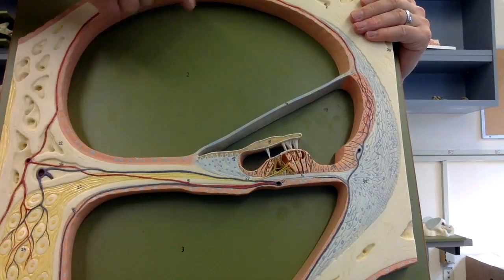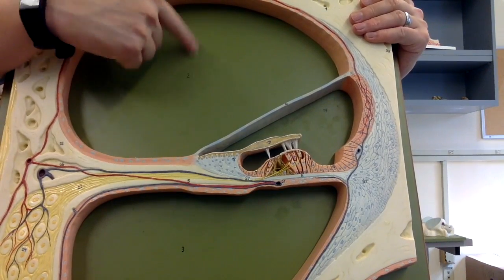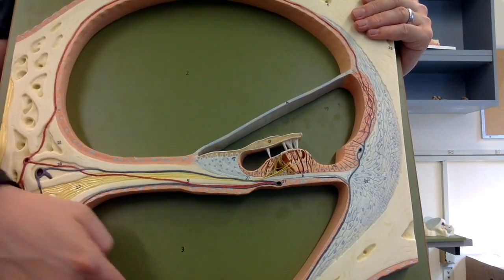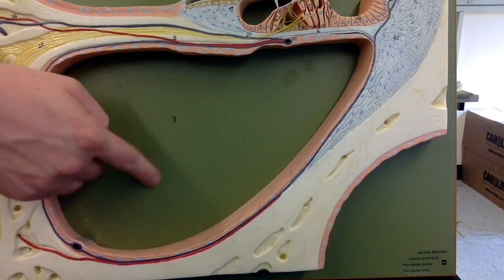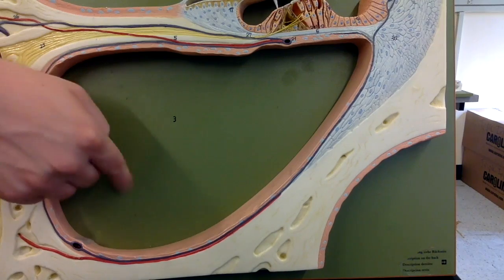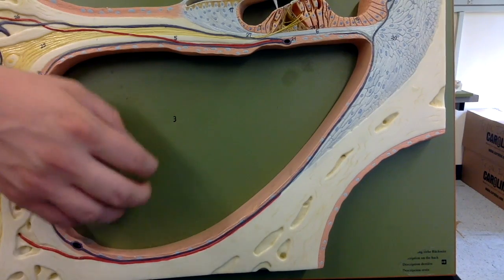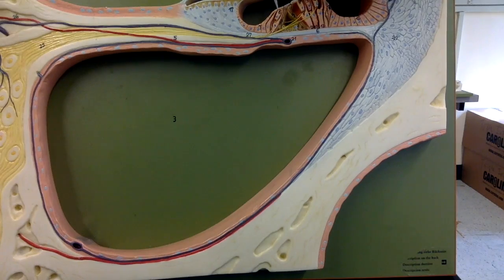We have the cochlear duct right here. So this is the scala vestibuli, or vestibular duct, on top, and this is the scala tympani, or tympanic duct, on the bottom.